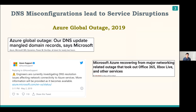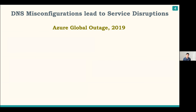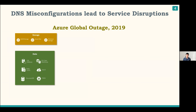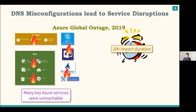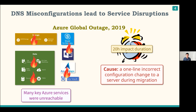One of the worst outages due to DNS was the one that happened at Microsoft in 2019, and this was what originally got us interested in DNS. On May 2nd, almost all of Microsoft's services became unavailable for 20 hours — including Azure, Xbox Live, Office 365, and many more. The problem started when connectivity to Azure storage services was lost, and subsequently everything running on a VM started to fail. After 20 hours of debugging, engineers found the problem was due to a one-line manual change to a DNS configuration file during a routine migration.